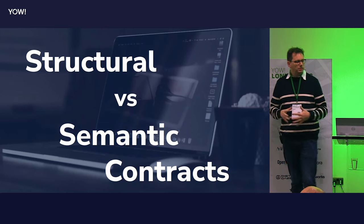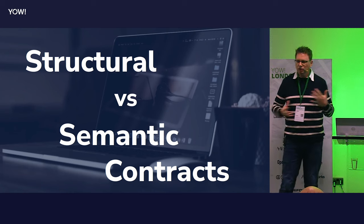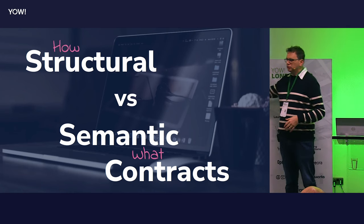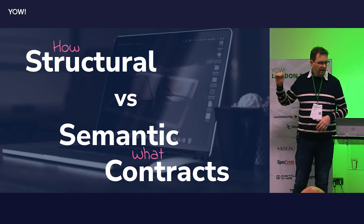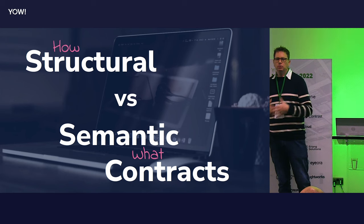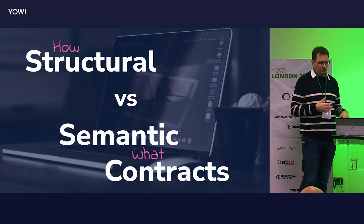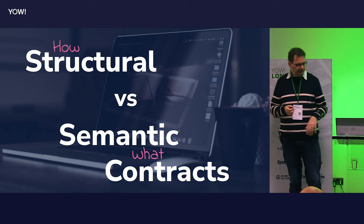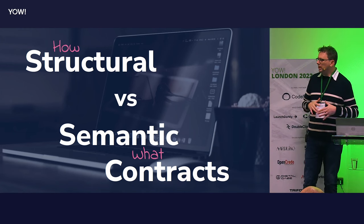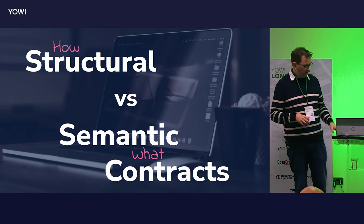I want to talk a little about structural versus semantic contracts — a big concept that underpins this. Structural contracts are very much about the how: how do I connect to you, what protocol do I speak, what information do I need to give you, what are the field names you're going to give me back? Versus semantic contracts that talk about: what is the information I'm going to find when I get there, what is the data you're going to give me?